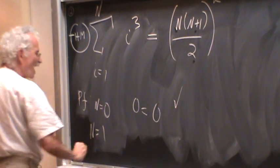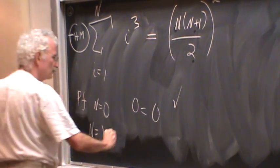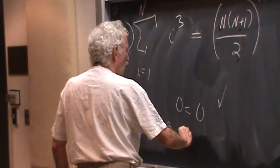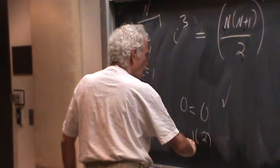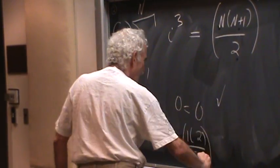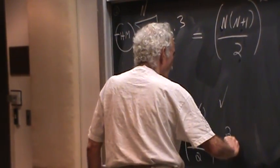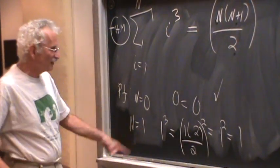For n equals 1, you get 1 cubed equals 1 times 2 over 2, squared. 1 cubed equals 1. Yeah!